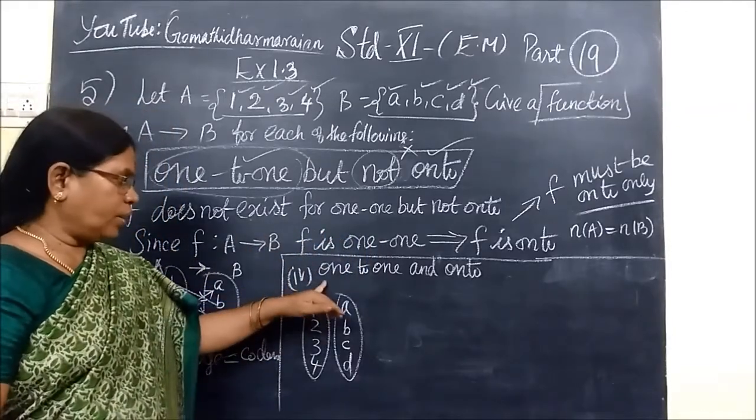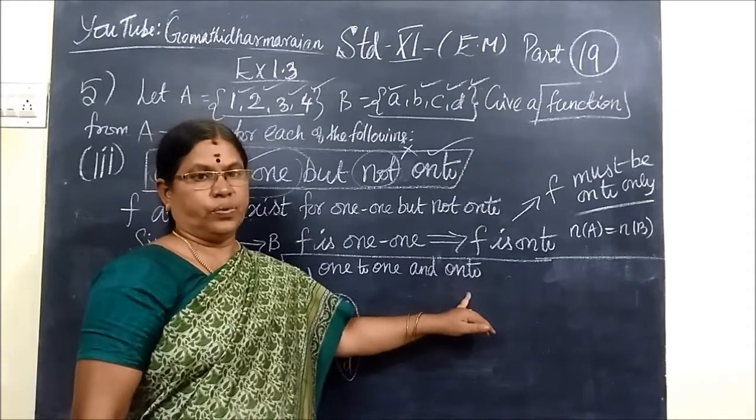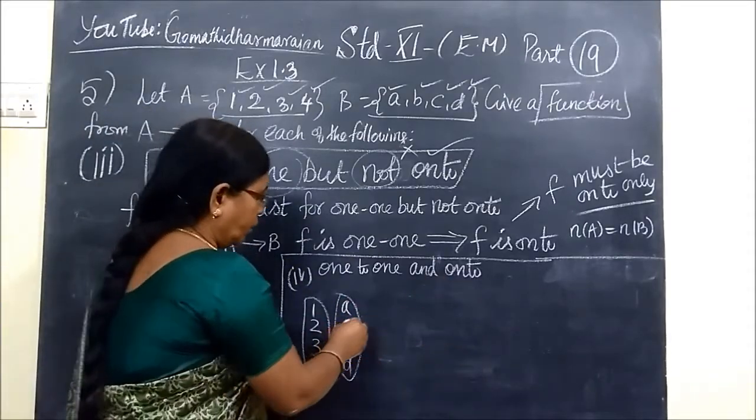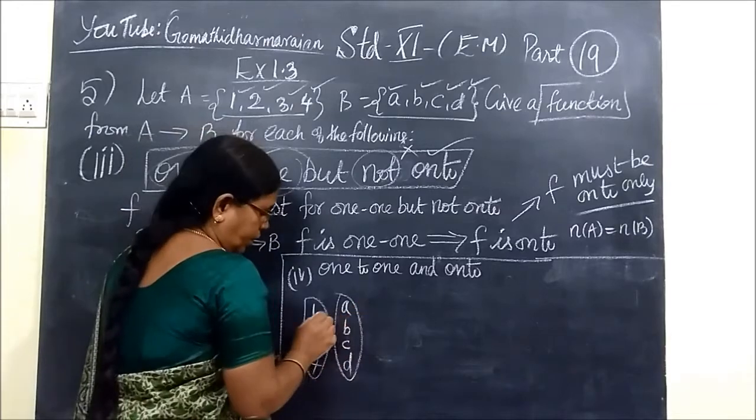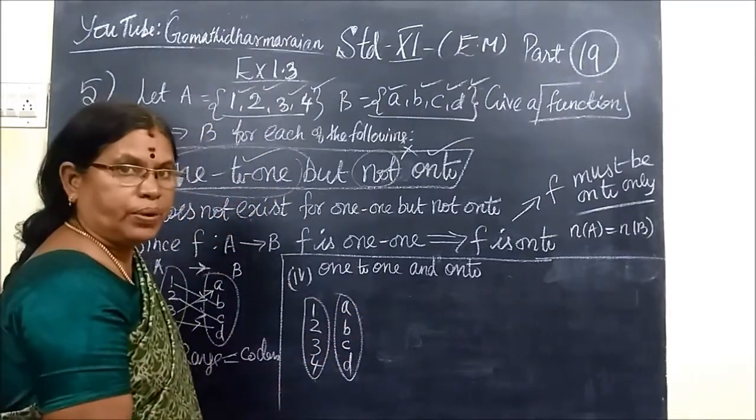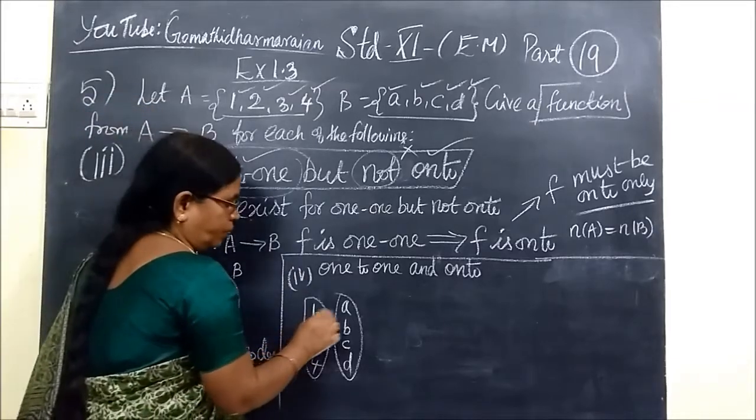Then last one you are considering 1-1 and onto. 1-1 also onto. So different element in A should be associated to different element in B. So in this way you are writing the answer.